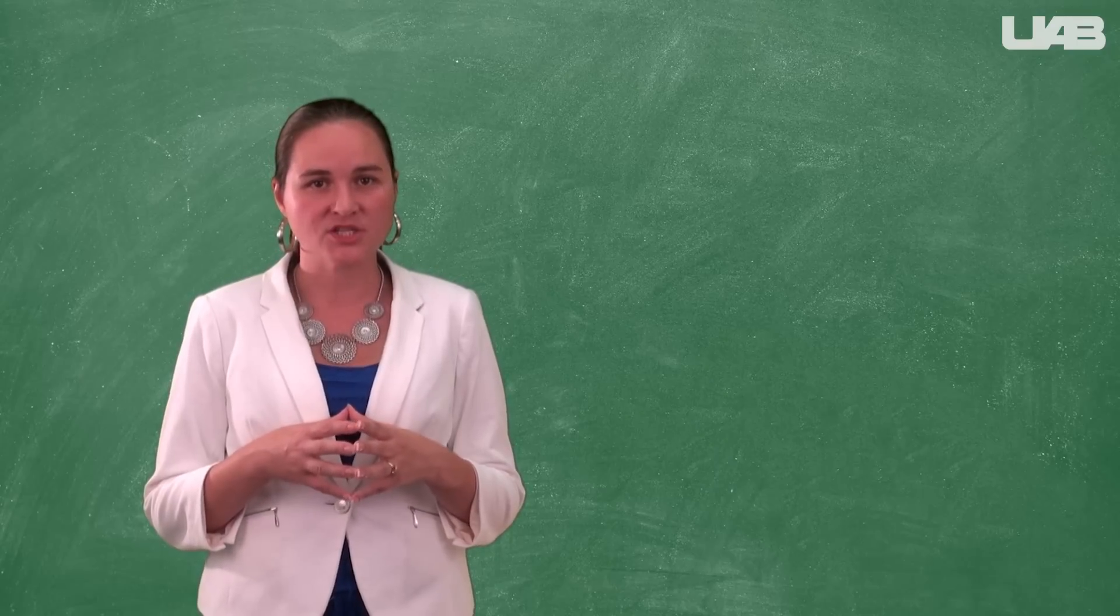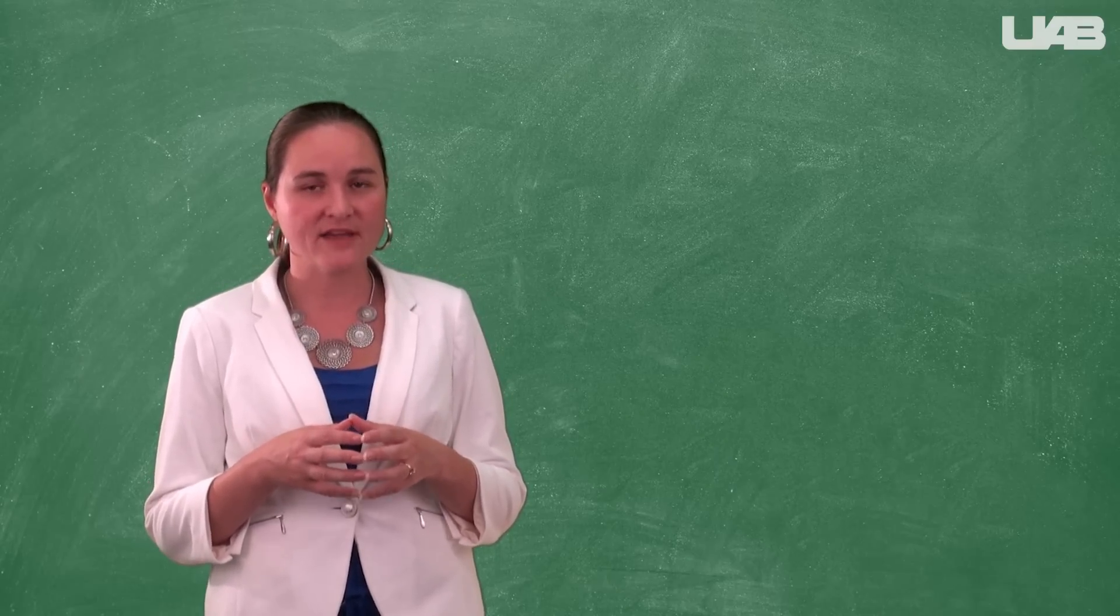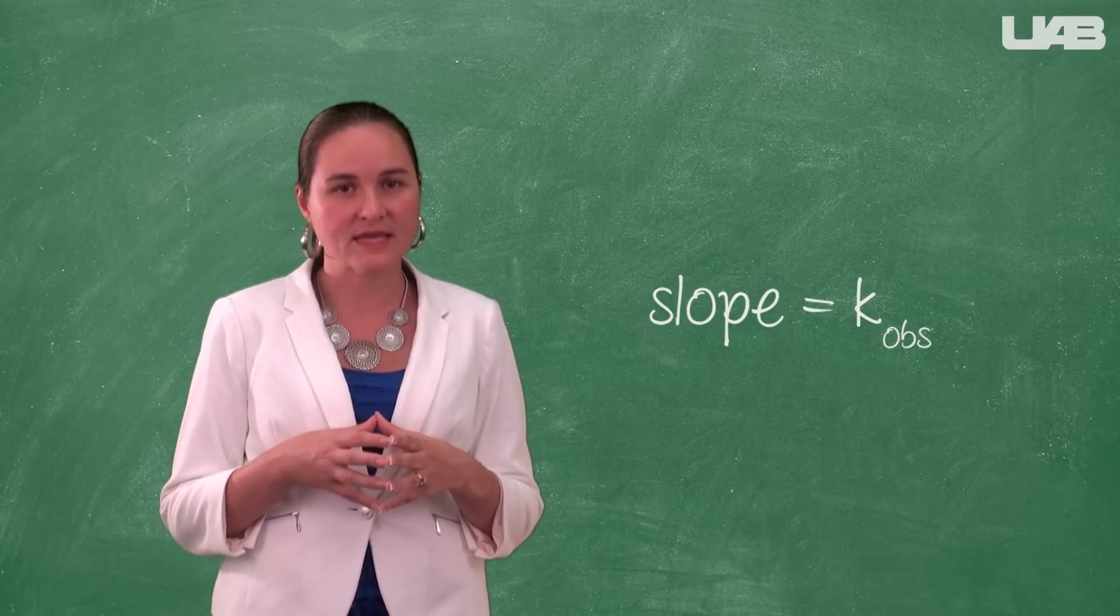Once you know the order of the reaction, you will take the corresponding graph and calculate the slope. The slope is equal to K observed.